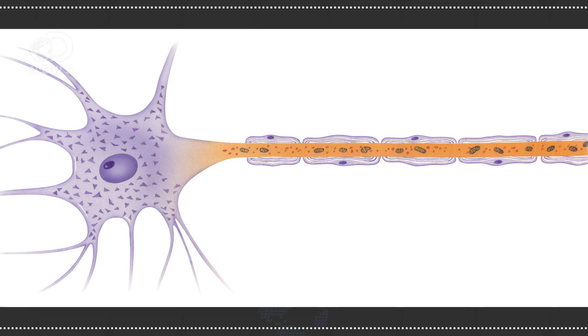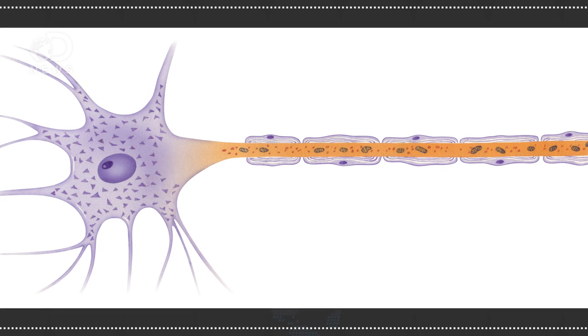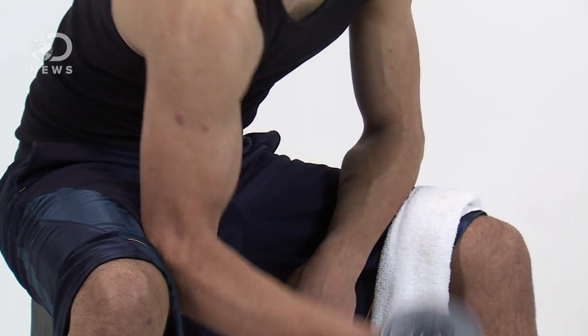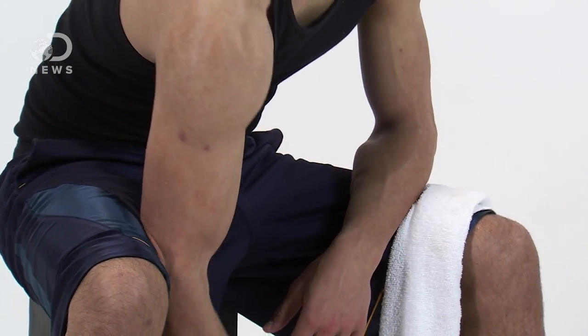Instead, nerve cells, called motor neurons in the brain and spinal cord, degenerate. These motor neurons tell the body's muscles to flex, so gradually, the brain loses control of its ability to command muscles.